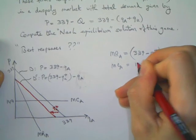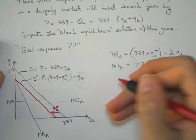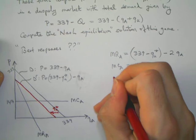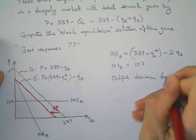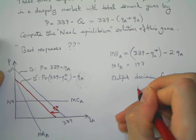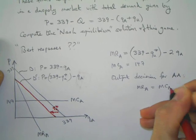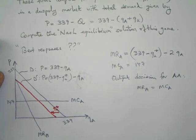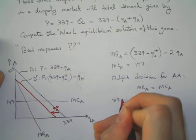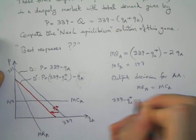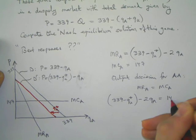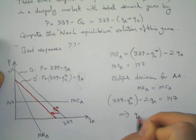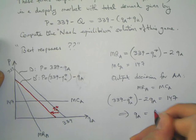Now knowing this, and we already know that the marginal cost is fixed at 147, it's possible to solve for the output decision of the firm. The output decision for American Airlines will be MRA equals MCA. This is the typical condition. Now we can solve this: 339 minus QU star minus 2QA equals 147.